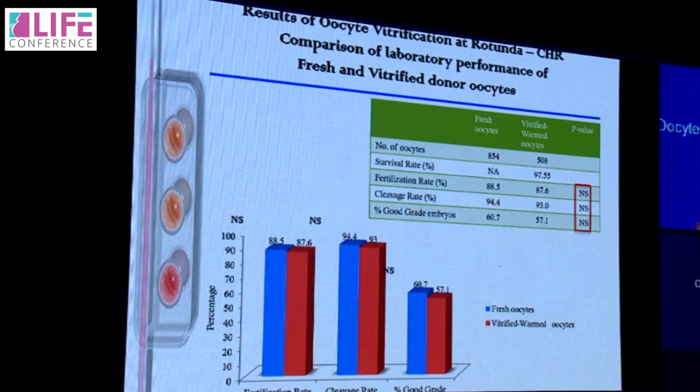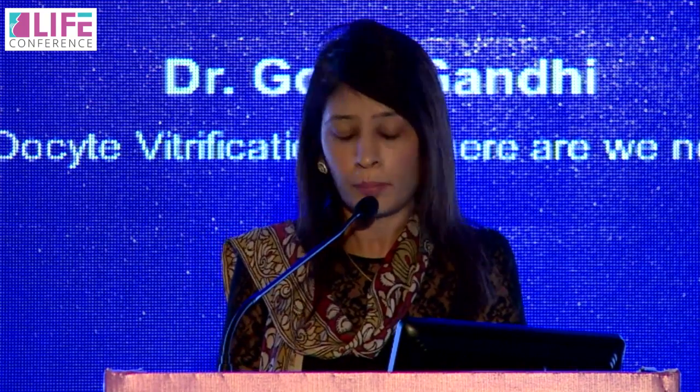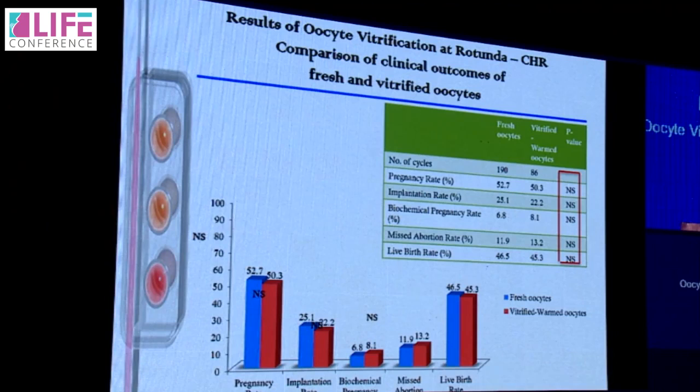Our results of oocyte vitrification with frozen donor oocytes show no difference between fresh and vitrified-warmed oocytes in fertilization rate, cleavage rate, and good-grade embryo rates. Looking at clinical results with the same donor oocyte group — where we expect high pregnancy rates — there was again no difference in pregnancy rate, implantation rate, or biochemical pregnancy rate between fresh and vitrified-warmed oocytes.